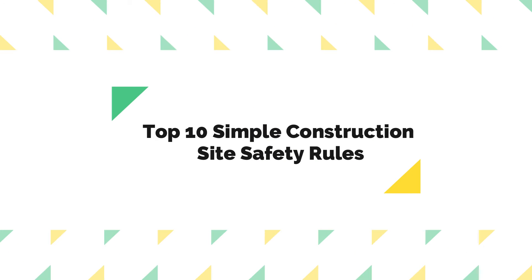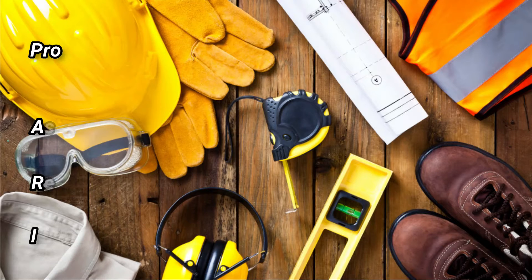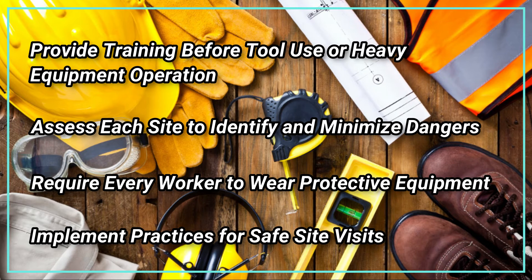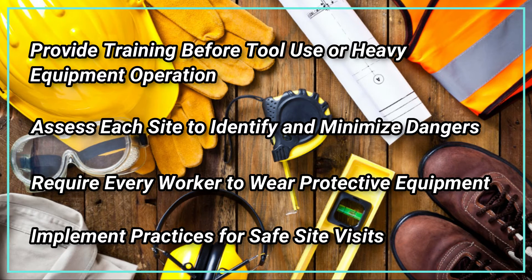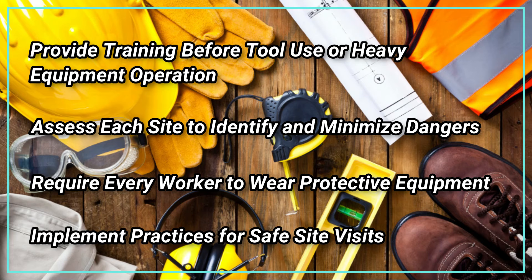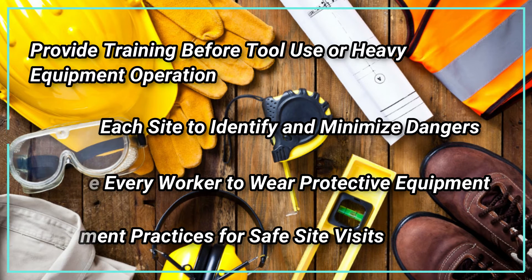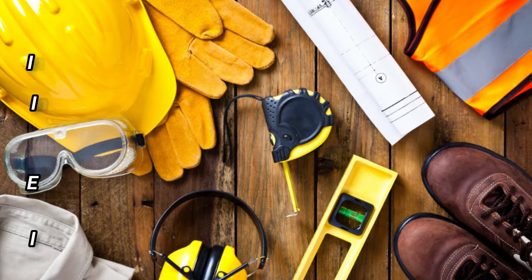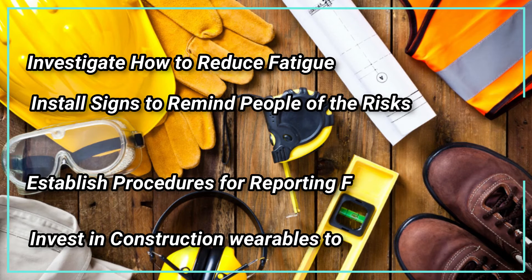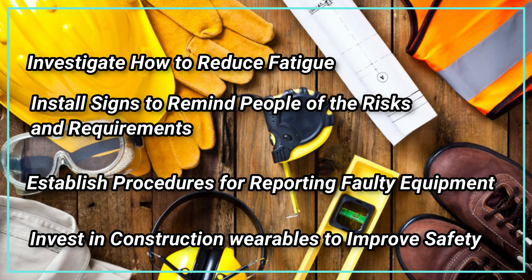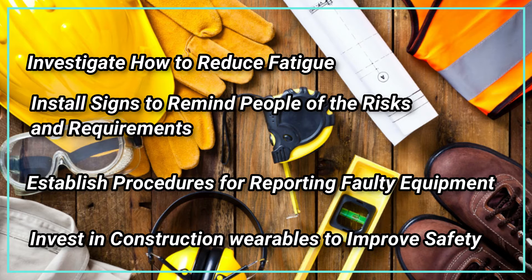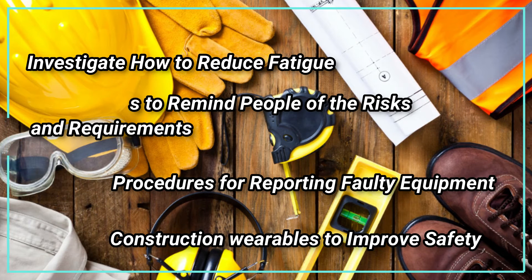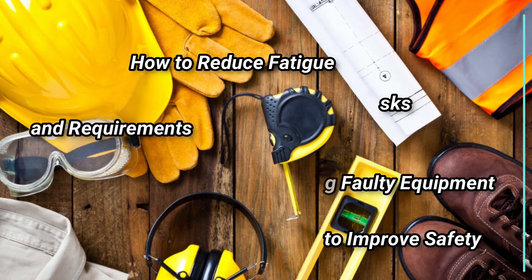Top 10 Simple Construction Site Safety Rules: Provide training before tool use or heavy equipment operation. Assess each site to identify and minimize dangers. Require every worker to wear protective equipment. Implement practices for safe site visits. Investigate how to reduce fatigue. Install signs to remind people of the risks and requirements. Establish procedures for reporting faulty equipment. Invest in construction wearables to improve safety.